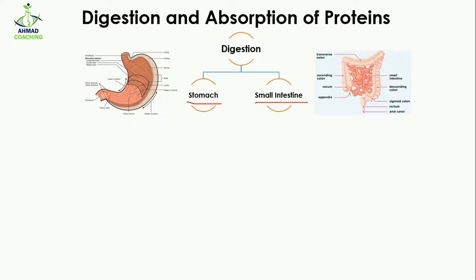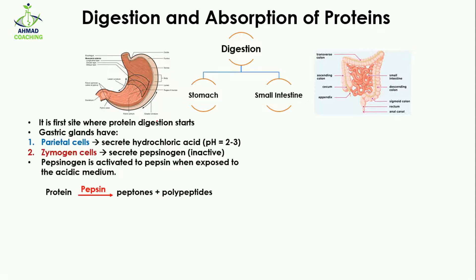The stomach is the first site where protein digestion starts. When you consume food, you chew it in the mouth and then it is transferred to the stomach, where digestion of protein begins. In the stomach there are gastric glands, and these gastric glands have parietal cells. The parietal cells secrete hydrochloric acid.